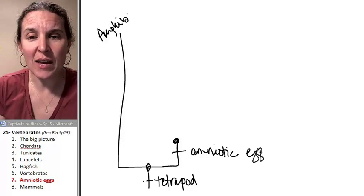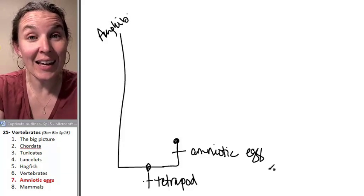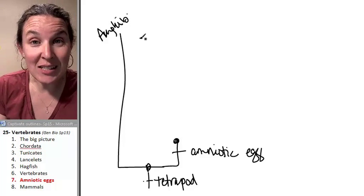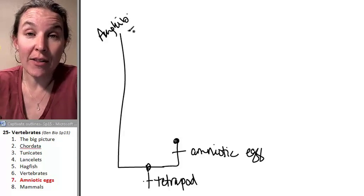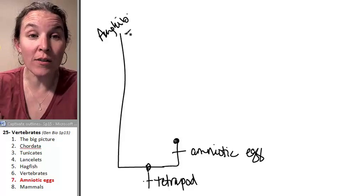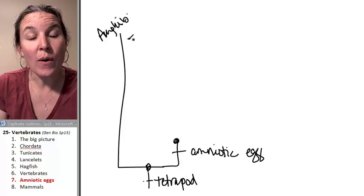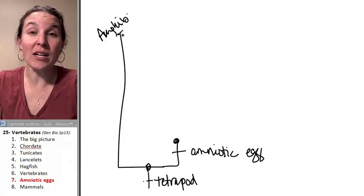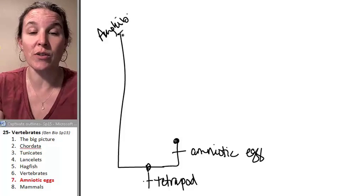We've talked about the amniotic egg a little bit, but the amniotic egg is this amazing structure. Amphibians still have to have water to lay their eggs in. If they don't have water, their eggs will dry out and they cannot reproduce. So they're stuck at least migrating to a water source to reproduce.